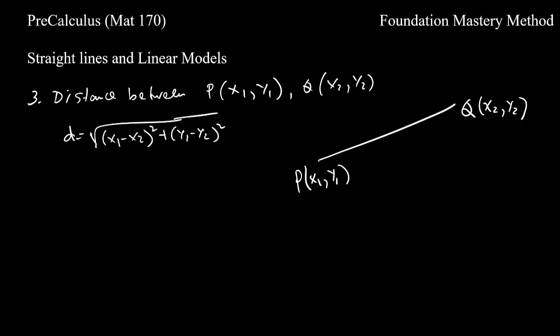Suppose P is the point (x₁, y₁) and Q is the point (x₂, y₂). The distance PQ is the square root of (x₁ - x₂)² + (y₁ - y₂)². You can also write it as the square root of (x₂ - x₁)² + (y₂ - y₁)².